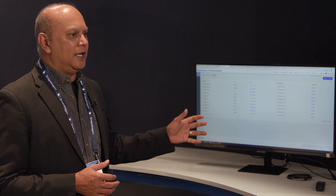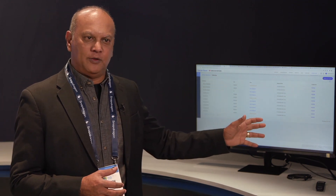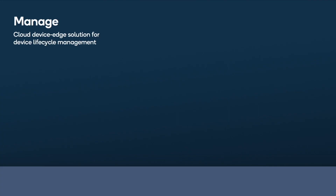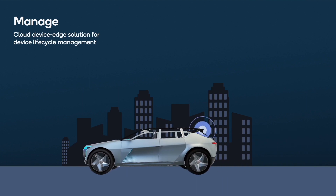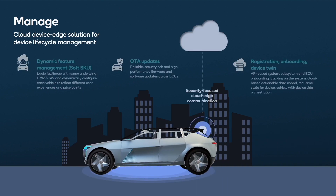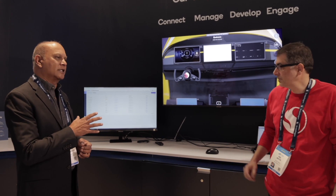You saw that we can do connectivity management with Cubic. We also are able to do all device management through car-to-cloud. That includes OTA updates that we can do throughout the lifecycle of the vehicle. One key difference we are bringing in device management is what is called soft SKU, or dynamic feature enablement throughout the lifecycle of the vehicle.